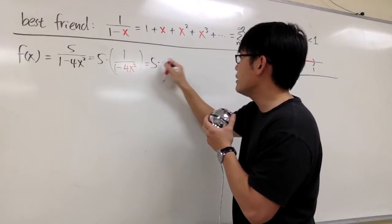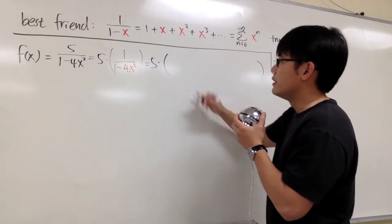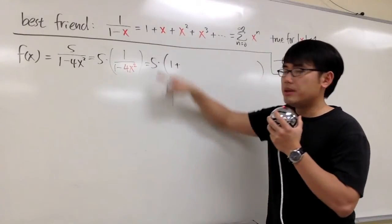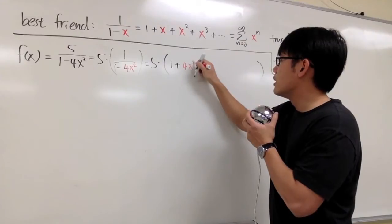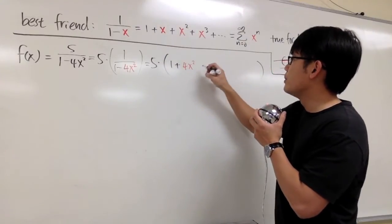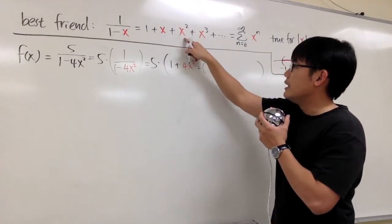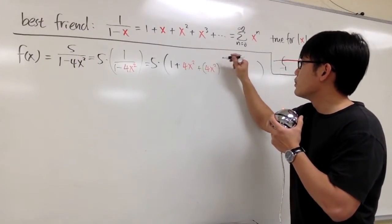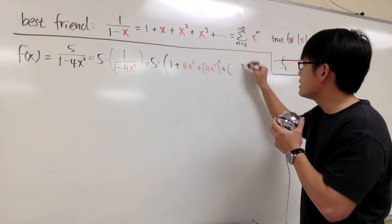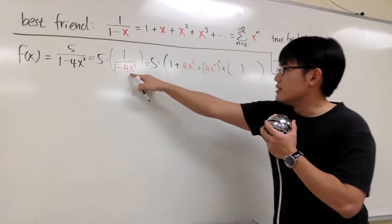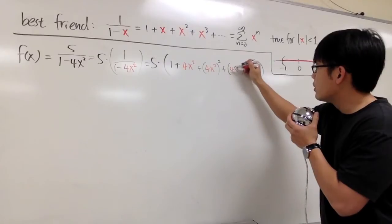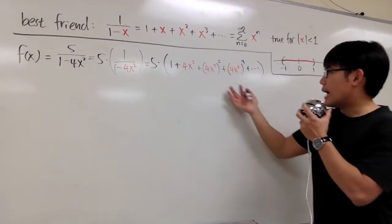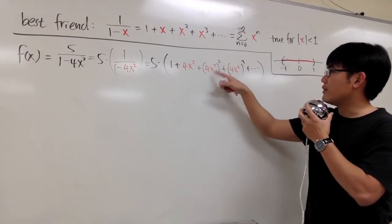We have the 5 all the way in the front, and inside we have: 1 plus (4x²) plus (4x²)² plus (4x²)³, and so on forever. You can work out the exponents here to get the expanded version of the power series.